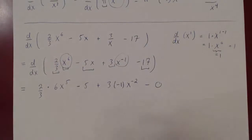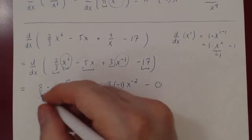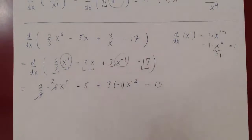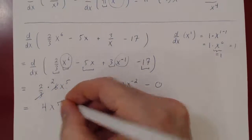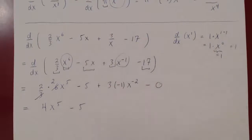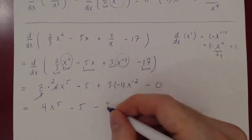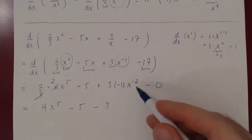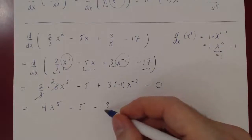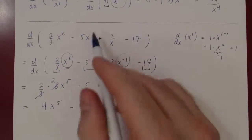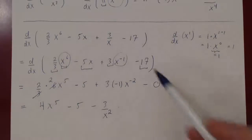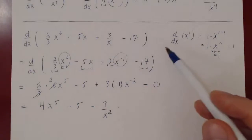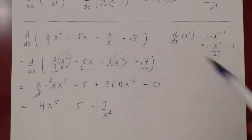Let's simplify. We have 2 times 6 over 3, and 6 over 3 is just 2, so the result is 4x to the 5 minus 5 minus 3x to the negative 2. You can leave it as negative 3x to the negative 2, or send the x down so the negative power of 2 becomes a positive power of 4, giving 3 over x squared. And now you have the derivative of this function — combining the constant rule, sum and difference rule, power rule, and constant multiple rule.